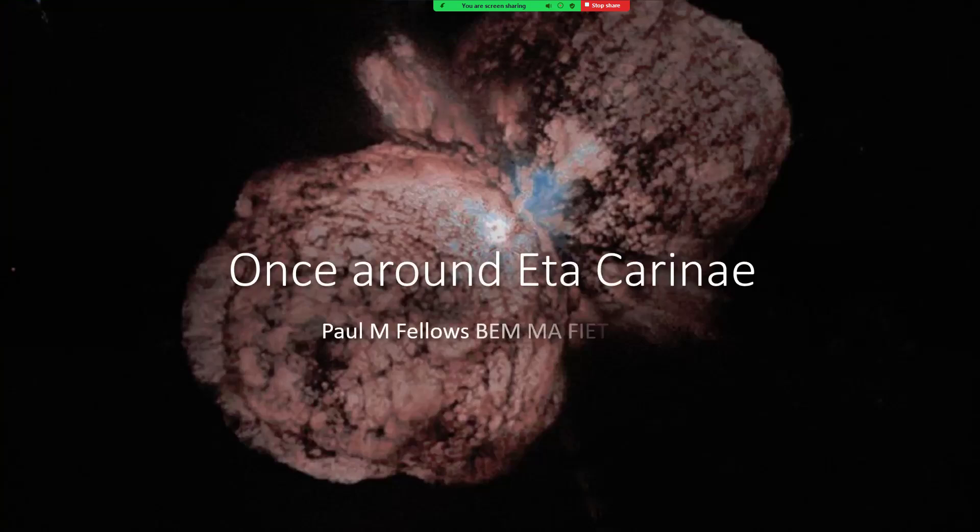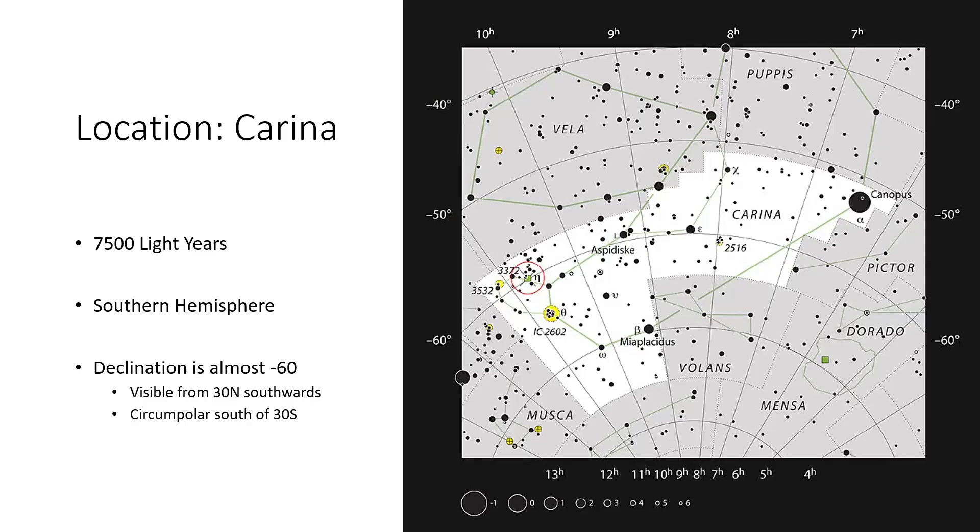Eta Carina is a star in the southern hemisphere, which I'm sure some of you will be pleased to hear since there have been a number of requests for such an object. I chose this one because it's an absolutely fascinating beast. It's in the constellation of Carina.